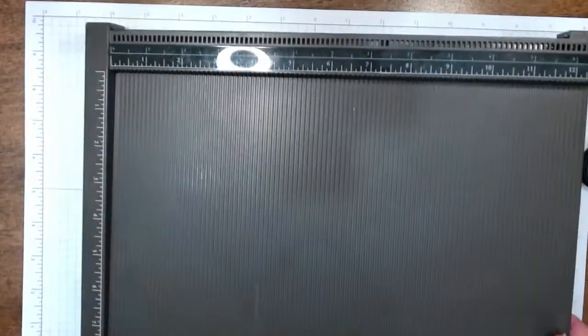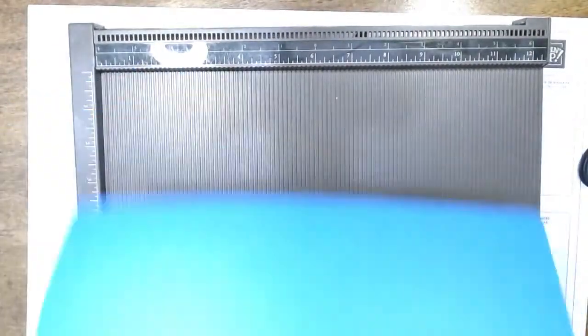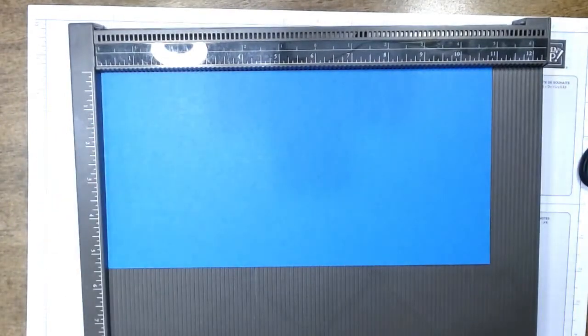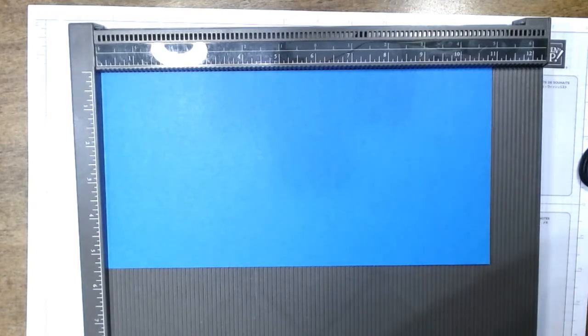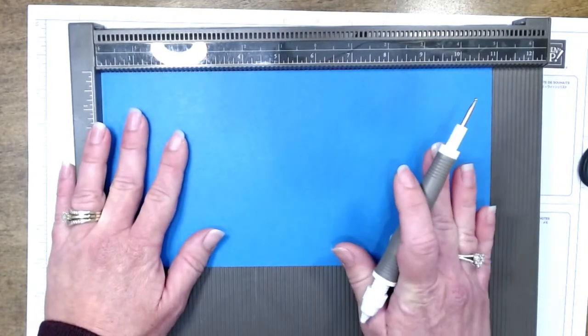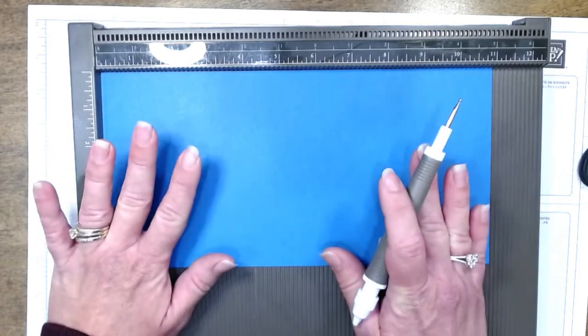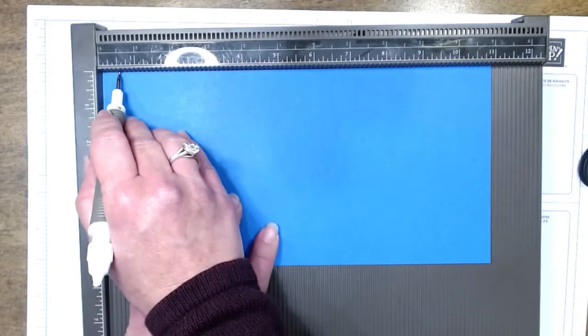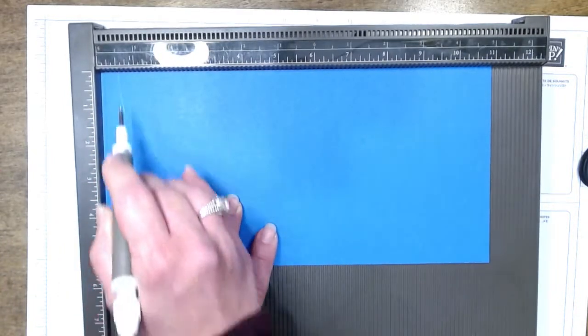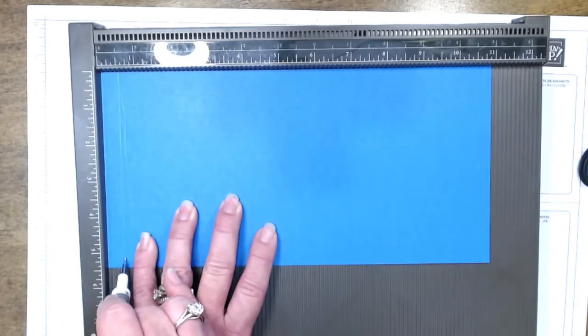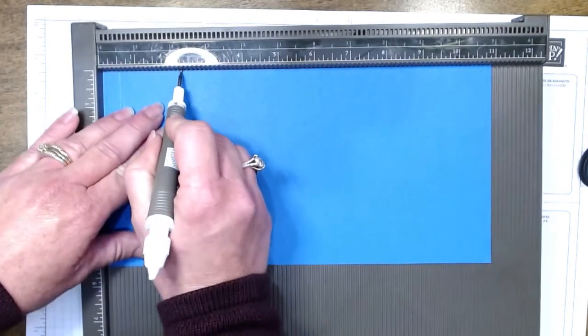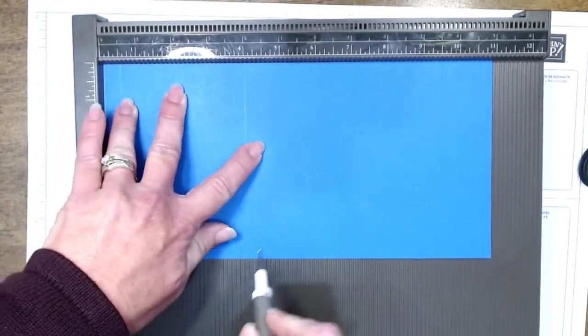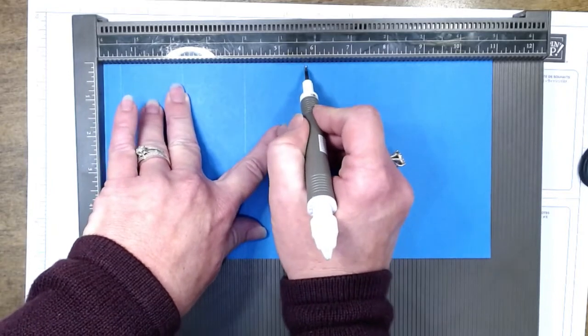You're going to bring in your scoreboard. We are going to put the 11-inch side up at the top. Our first score mark is going to be at a half an inch. Our next one is going to be at two and a quarter, four inches, and five and three-fourths.